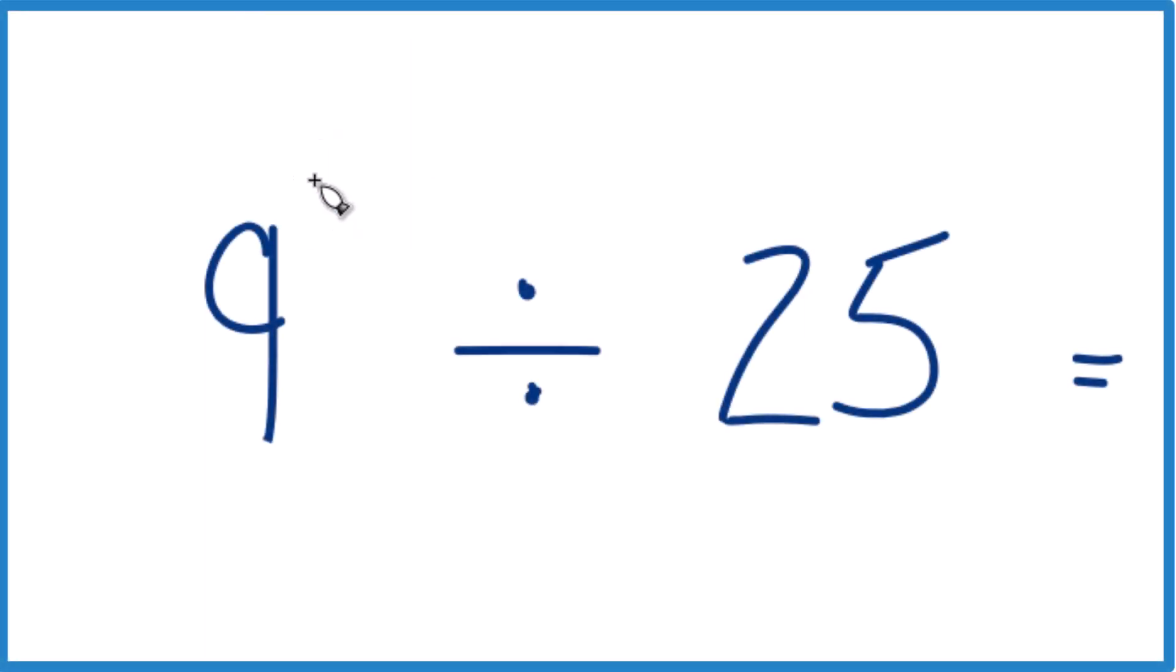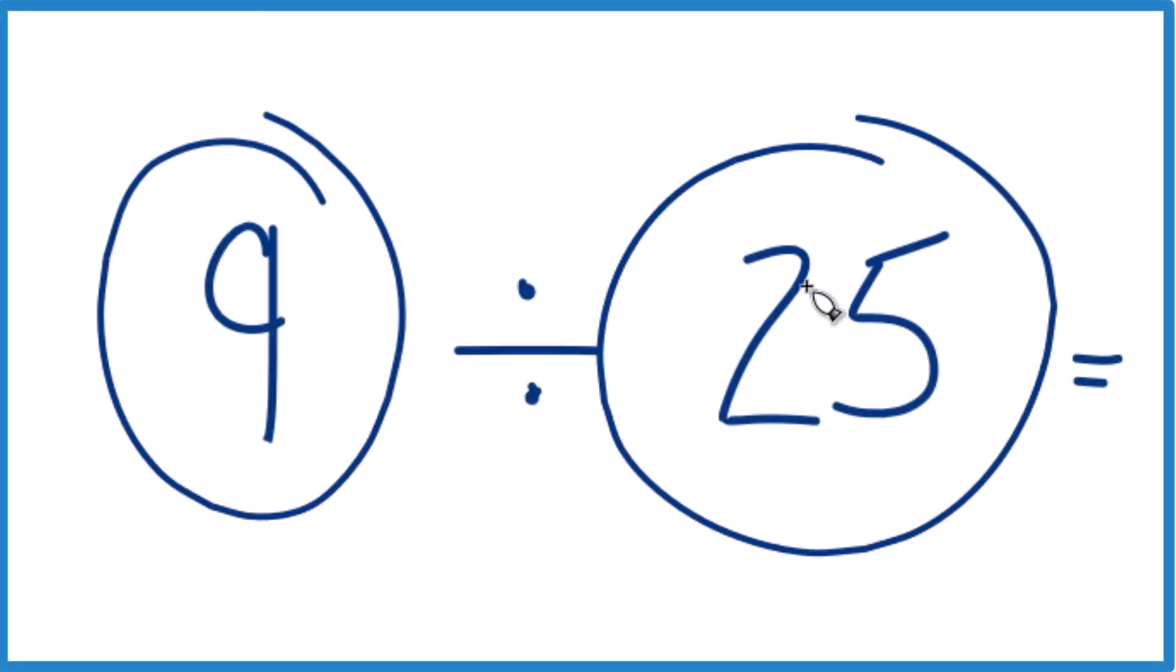Okay, so here's how you divide 9 by 25. Short answer, 0.36.